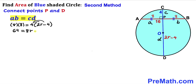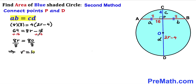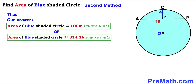Filling in: 8 times 8 equals 4 times (2r minus 4), giving us 64 equals 8r minus 16. Adding 16 to both sides: 8r equals 80, so r equals 10 units. Therefore the area of this blue shaded circle is 100 pi square units, approximately 314.16 square units. Thanks for watching — please don't forget to subscribe to my channel for more exciting videos!